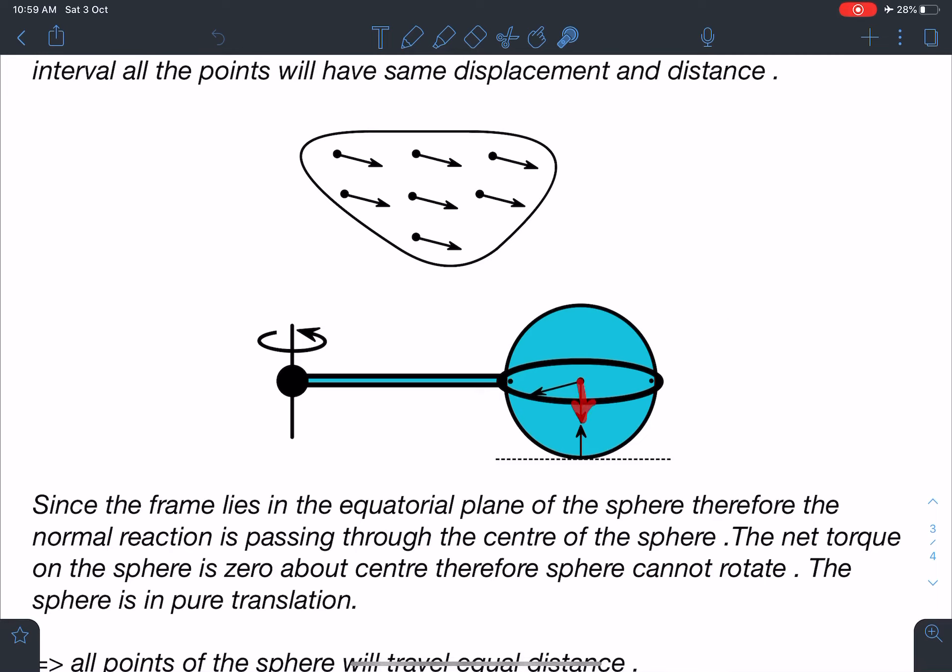So definitely this normal reaction cannot produce any torque. mg is also passing through center. This normal reaction from the ground is also passing through the center.